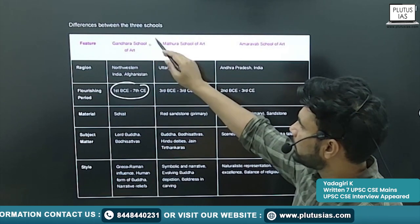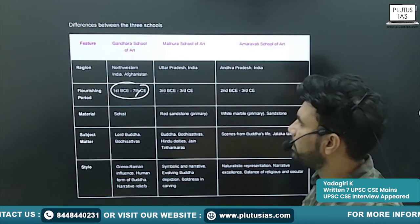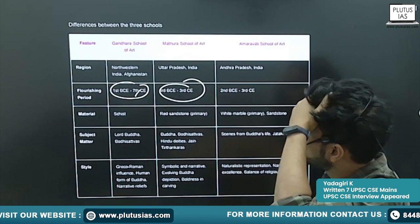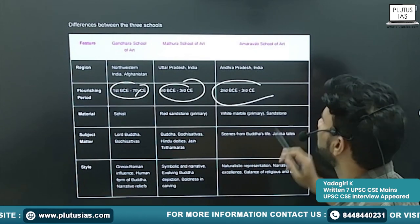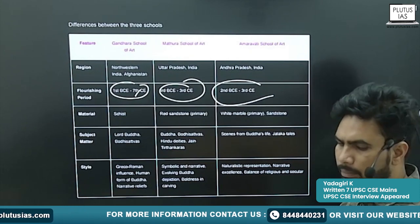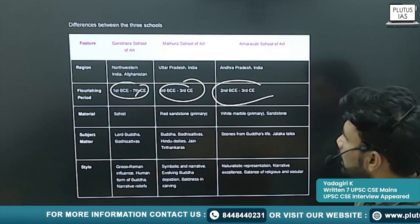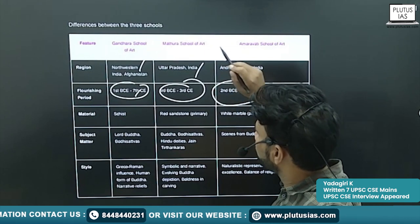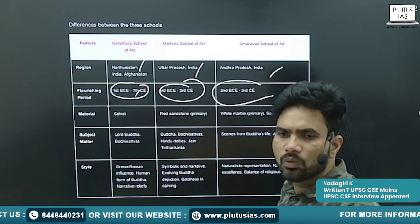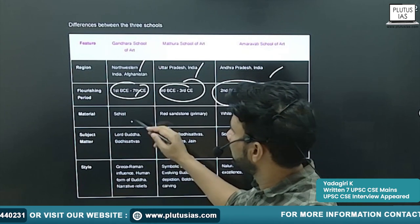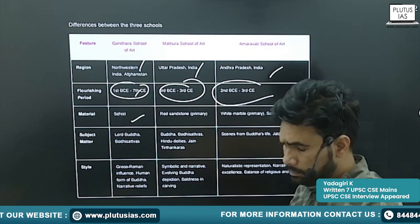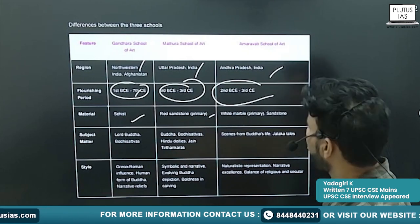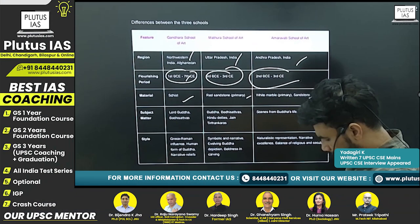Gandhara School of Art: flourishing period 1st century BC to 7th century AD. Mathura School: 3rd century BC to 3rd century AD. Amaravati: 2nd century BC to 3rd century AD. Regions: Gandhara — north-western India and Afghanistan. Mathura School — Uttar Pradesh. Amaravati School — Andhra Pradesh. Material: Gandhara uses schist, Mathura uses red sandstone, and Amaravati uses white marble.